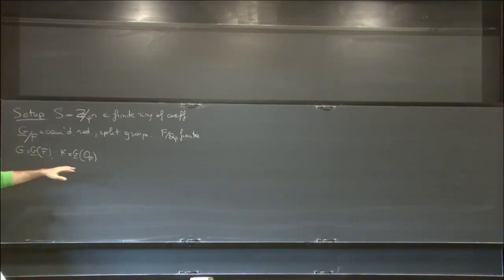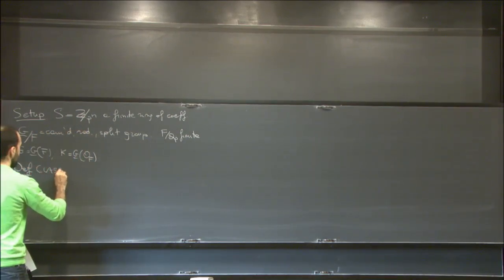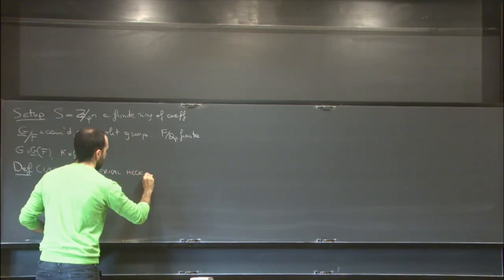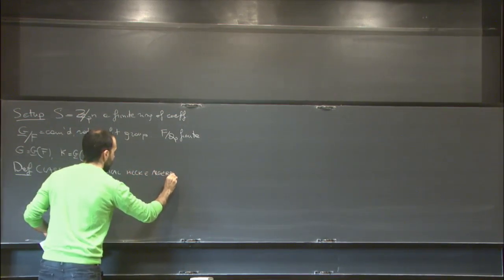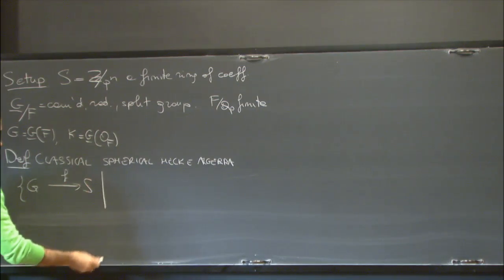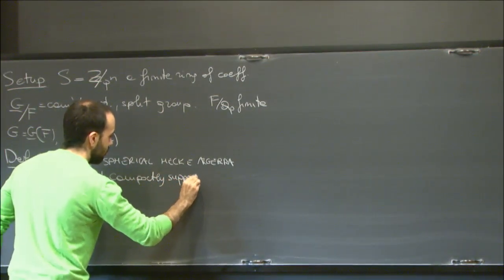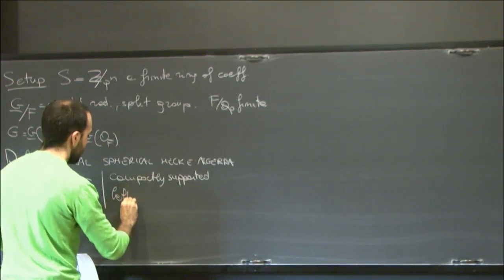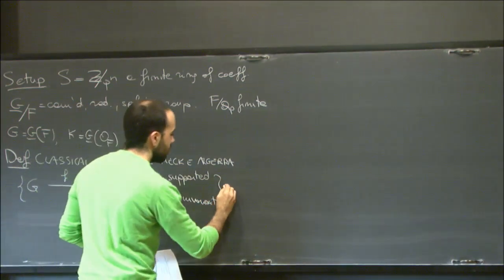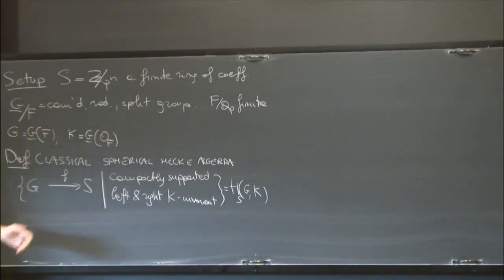Here, for every prime P, we did indeed fix a P. So let me remind you the definition of the classical spherical Hecke algebra. This can be described as functions from G to S, such that they are compactly supported and left and right K-invariant. I'm going to denote this algebra by H(G, K), and the operation in this model is just convolution.